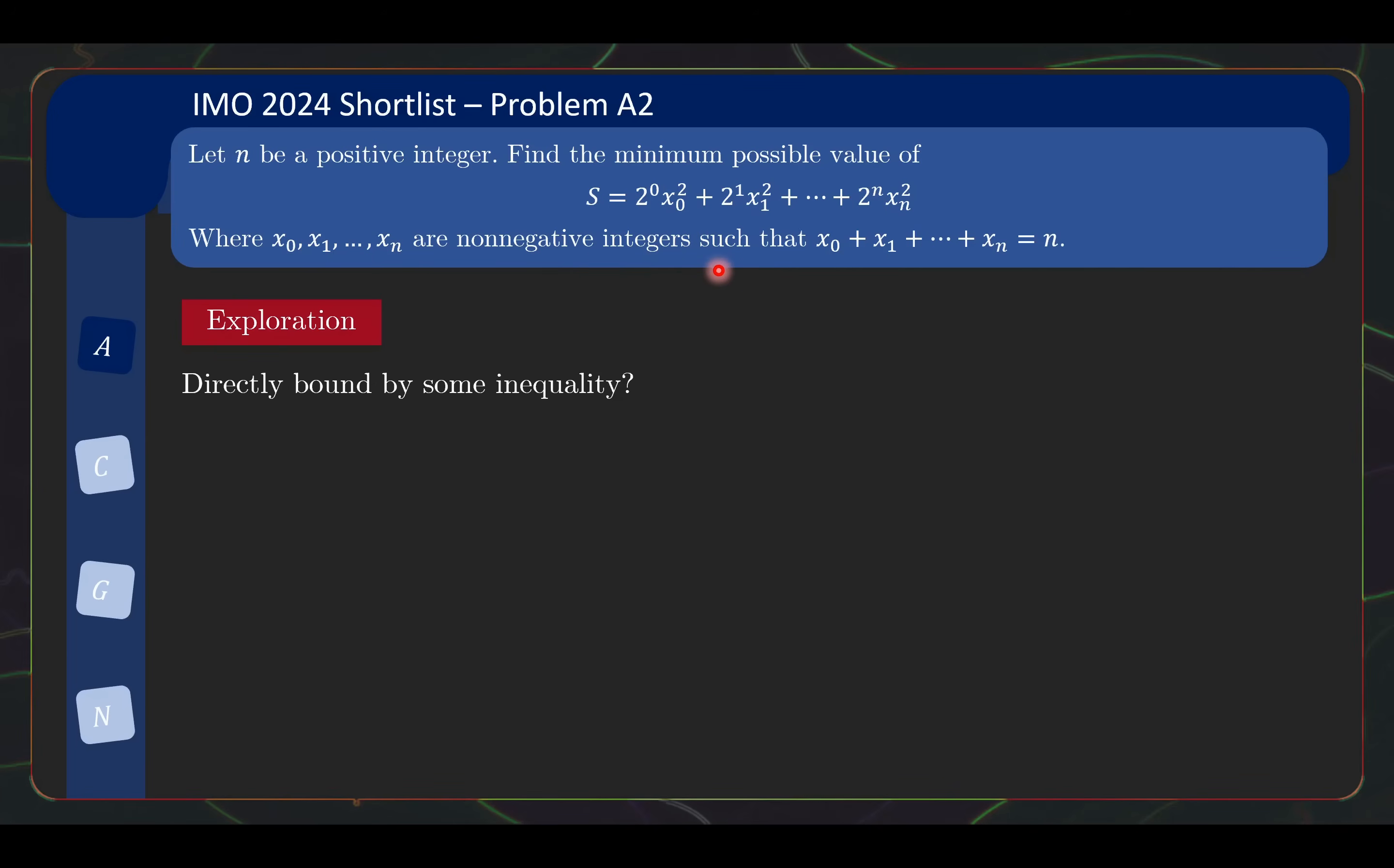The xi^2 might remind you of Cauchy-Schwarz, but even if you apply that, you will realize you have a problem. Because in the equality case, you will end up with real numbers. But here, x0 to xn are non-negative integers. So maybe any hope of using an inequality goes out of the window because this is very restrictive - it must be integers. But then, you will be quickly led to some observations.